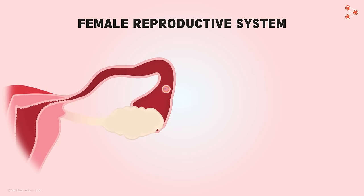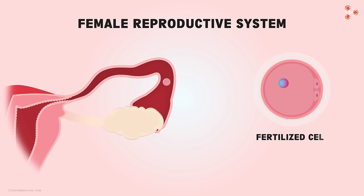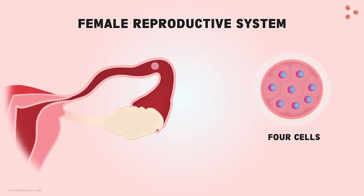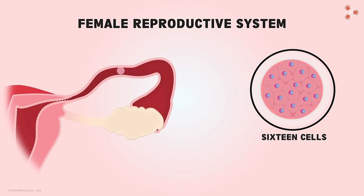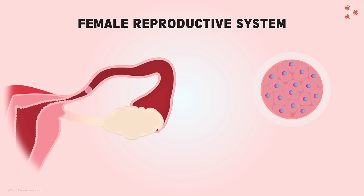Let us focus on one of the fallopian tubes where the egg cell has got fertilized. Now this fertilized egg cell will divide to form two cells, followed by four and so on. This results in the formation of a ball-like structure. This ball contains many cells inside it. Do you know what this ball of cells is referred to as? When the cell number in it is 16, then it is referred to as the morula.